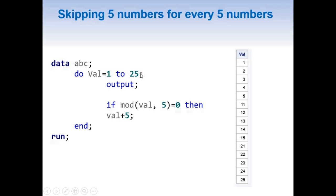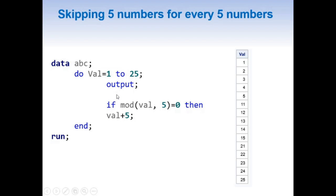The loop increments by 1, so val becomes 21 and outputs. The IF condition is not satisfied for 21, 22, 23, or 24. When val reaches 25, it exactly satisfies the condition and 5 is added, making it 30. The loop tries again, increments to 31, checks the stop value — since 31 is greater than 25, it no longer loops and exits with the END statement. We can see our results going from 1 to 25 with 5 skipped for every 5.